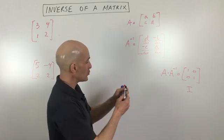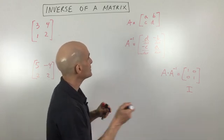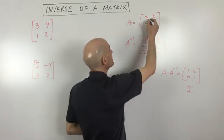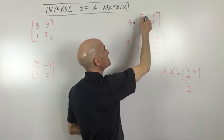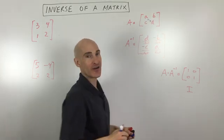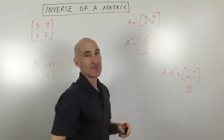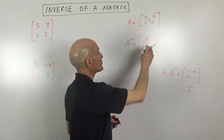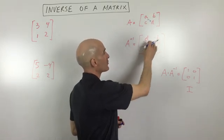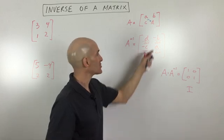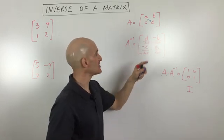To find the determinant, what you want to do is interchange the A and the D — so you're going to put D here and A there. You're going to keep the B and the C in the same position, but make them the opposite sign. So I've written negative B and negative C, representing the opposite of B and the opposite of C.